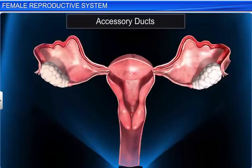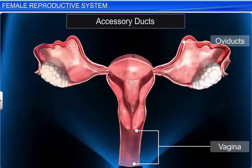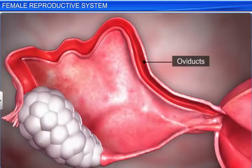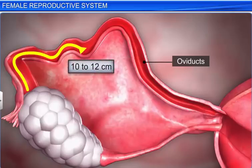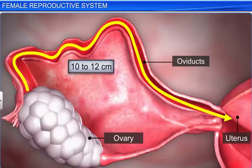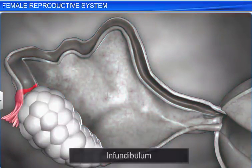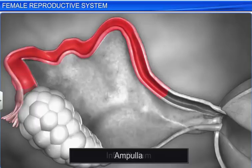The accessory ducts of the female reproductive system are the vagina, oviducts, and the uterus. The pair of oviducts, or fallopian tubes, is about 10 to 12 centimeters long and extends from the periphery of each ovary to the uterus. Each oviduct is differentiated into 3 parts, namely the infundibulum, ampulla, and isthmus.